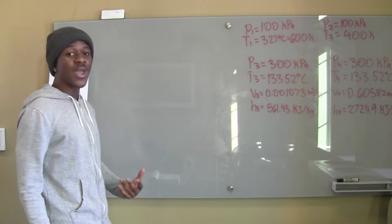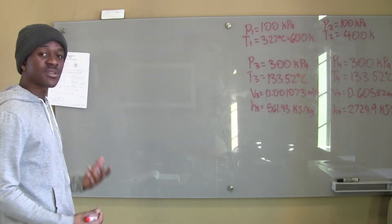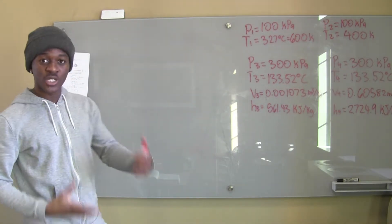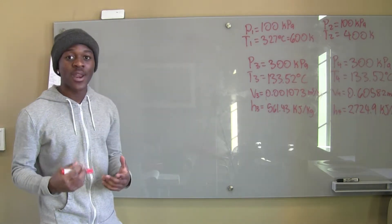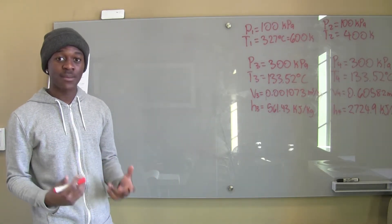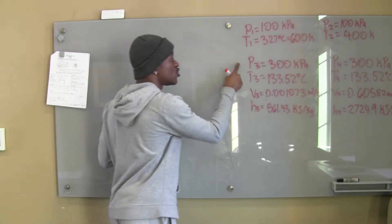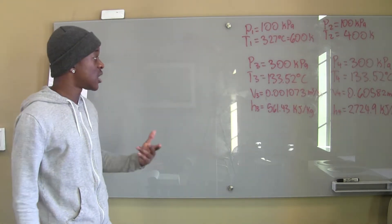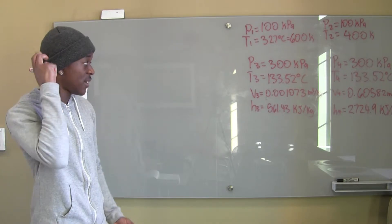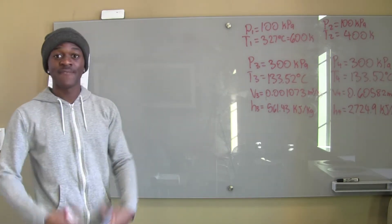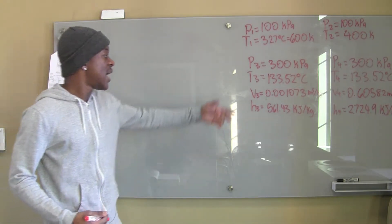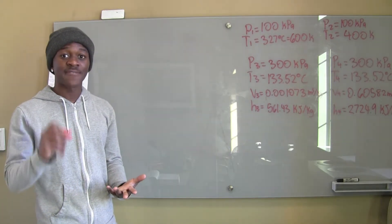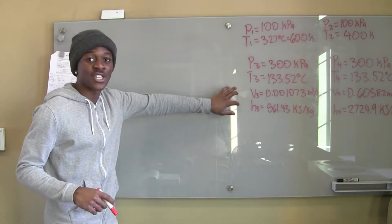For the water, we had to go to the saturation table. They said we're dealing with a saturated liquid at first, and the water is going through boiling. So I went to table A5, which is the pressure table for saturated water, and went to 300 kilopascals. I found that T3 was 133.52 degrees Celsius. V3 was simply VF at 300 kilopascals, and H3 was HF at 300 kilopascals. Remember, we use the subscript F to denote a saturated liquid.